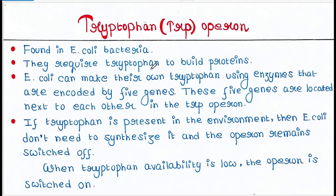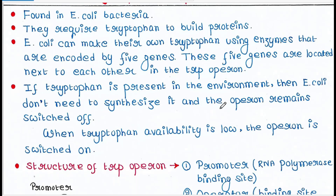E. coli can make their own tryptophan using enzymes that are encoded by five genes. These five genes are located next to each other in the tryptophan operon. If tryptophan is already present in the environment — in the bacterial media — then they don't need to synthesize it and the operon remains switched off.